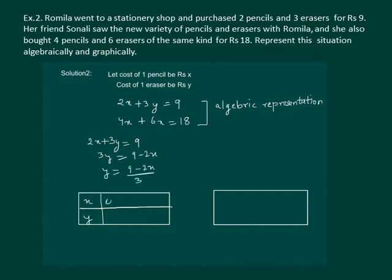For x equal to 0 we get y equal to 3. If we take x equal to 3 we get 9 minus 6 that is 3 by 3. So y comes out to be 1.